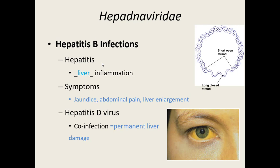Hepatitis B generally goes away on its own without any long-lasting issues. However, if you also have the hepatitis D virus — which is an RNA virus we'll cover in the next section — and you get both together, it's called a co-infection, and that's where you can develop permanent liver damage. So hepatitis B alone is not great, but generally shouldn't cause permanent liver damage unless you also have hepatitis D.